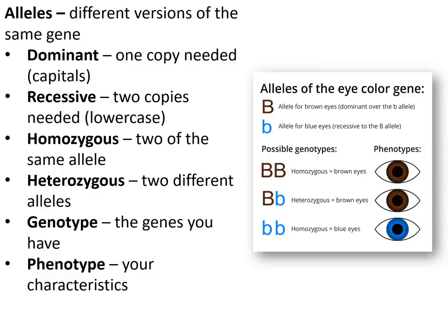Alleles are different versions of the same gene and can be dominant or recessive. Dominant means one copy is needed to show the characteristic; recessive means two copies are needed. You can be homozygous — two of the same allele — or heterozygous — two different copies. Your genotype is the genes you have; your phenotype is the characteristics that result from those genes.